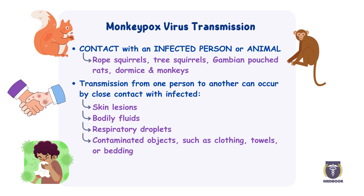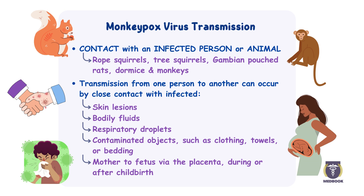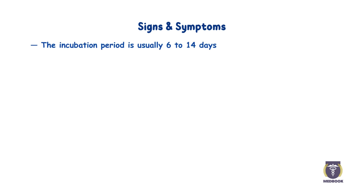Transmission can also occur from mother to fetus via the placenta, which can lead to congenital monkeypox, as well as during close contact with the virus during and after birth. According to the Centers for Disease Control and Prevention, the incubation period of monkeypox is usually 6 to 14 days, but can range from 5 to 21 days.